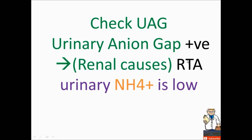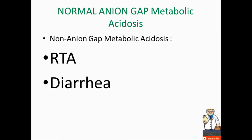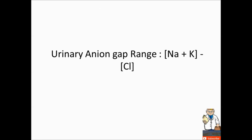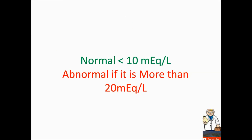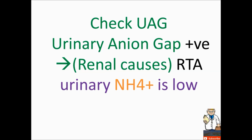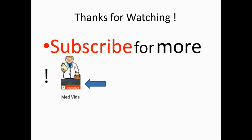What about diarrhea? The urinary anion gap will be negative, indicating GI causes like diarrhea. To review: for non-anion gap metabolic acidosis, check the urinary anion gap. When it is positive, it is RTA — urinary ammonium ion is low. When it is negative, it indicates GI causes like diarrhea. Thanks for watching and subscribe for more. Thank you so much.